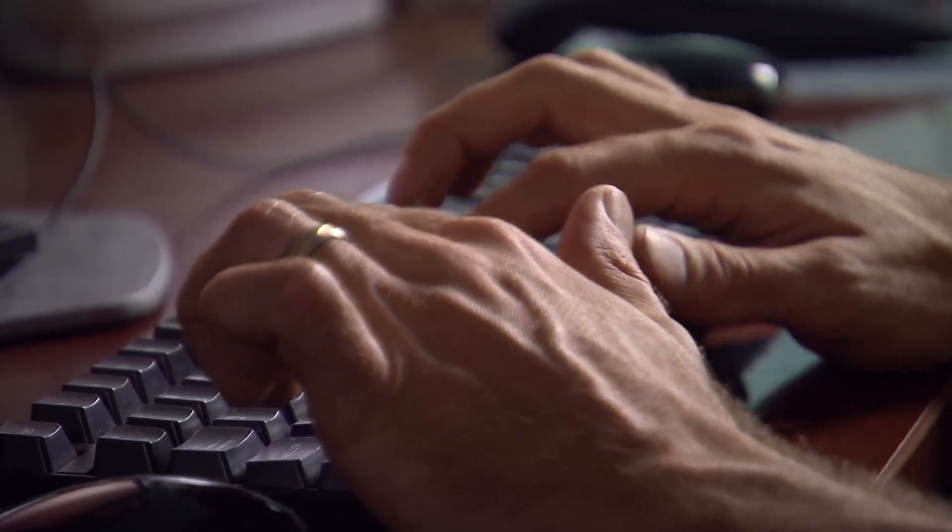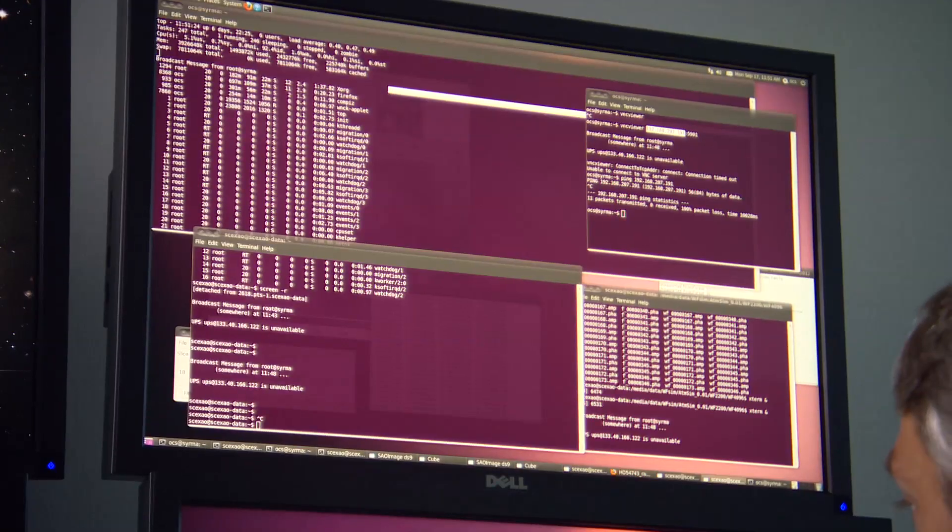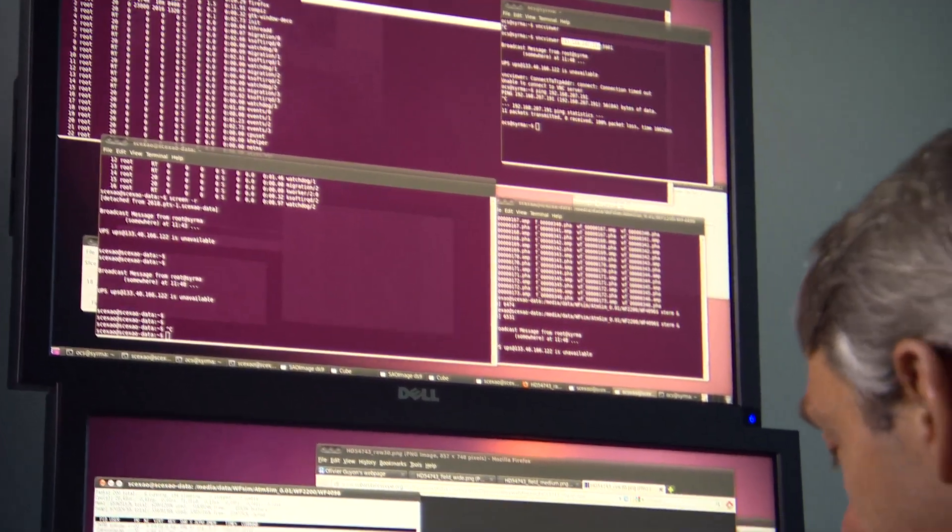Exoplanets are planets, like the Earth, or like Jupiter, for example, around other stars. So when you look at the sky at night, every star you see is another sun, and exoplanets are planets around those other stars.